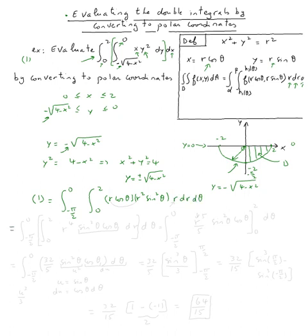Now this is going to equal the integral from negative π over 2 to 0, 0 to 2. So r times r squared—r cubed—times this r is r to the fourth. So it's r to the fourth sine squared θ cosine θ dr dθ.